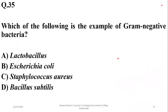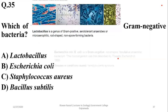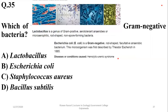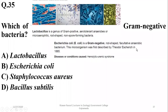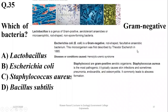Question 34: Which of the following is an example of gram-negative bacteria? Lactobacillus, Staphylococcus and Bacillus subtilis are gram-positive, while E. coli is a gram-negative, rod-shaped, facultative anaerobic bacterium. Beta is the right option.